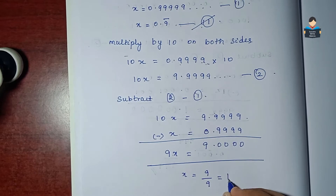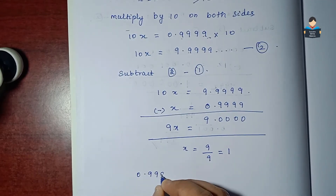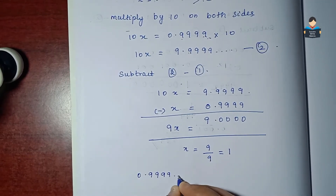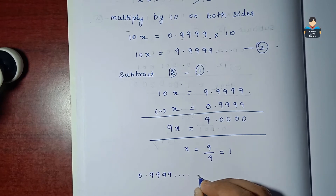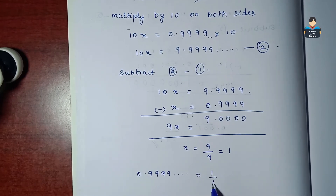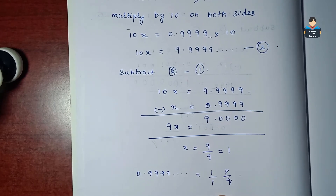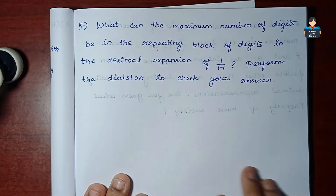Therefore x equals 9 by 9, which equals 1. So 0.999999... has the value 1. We put it in p by q form as 1 by 1.